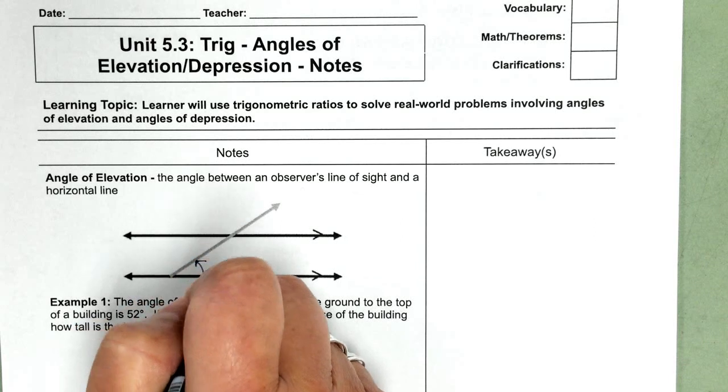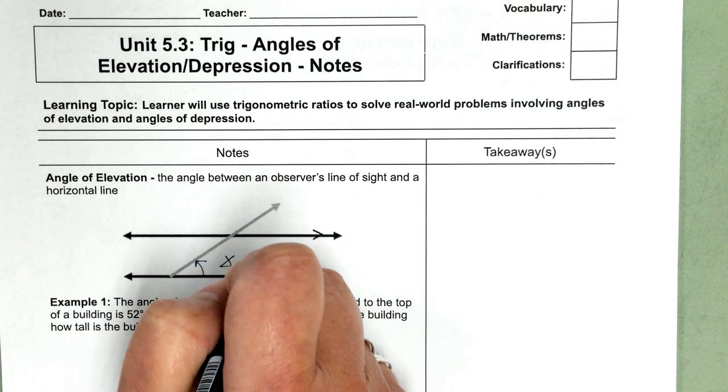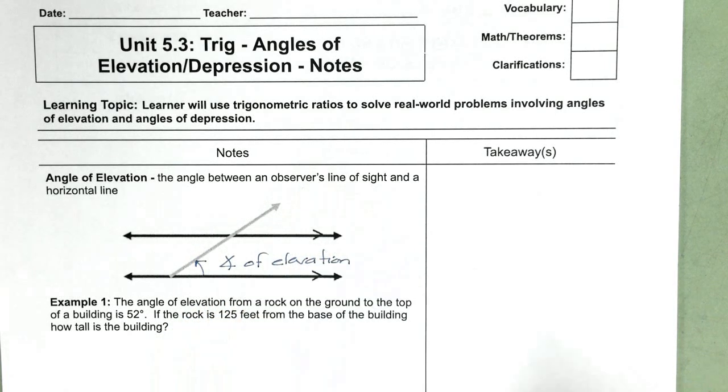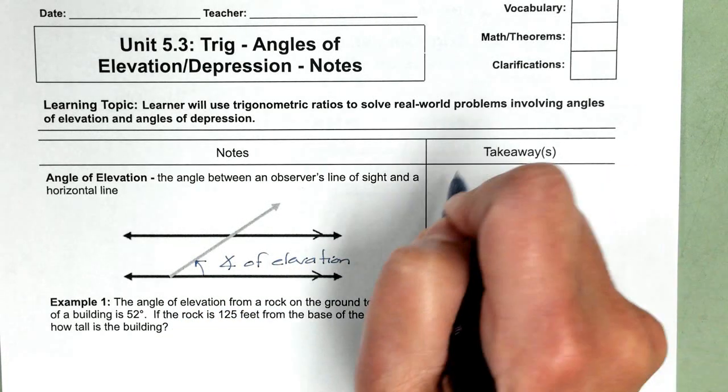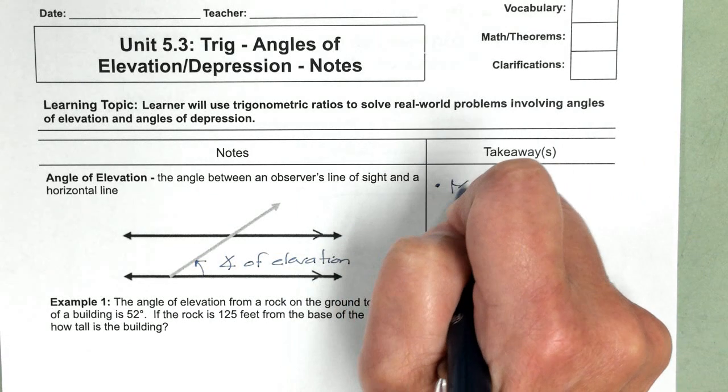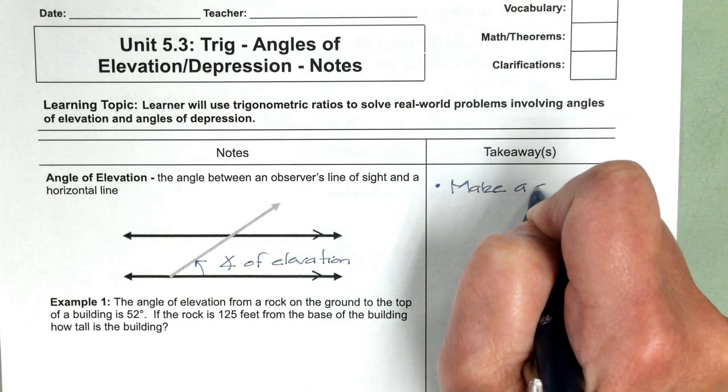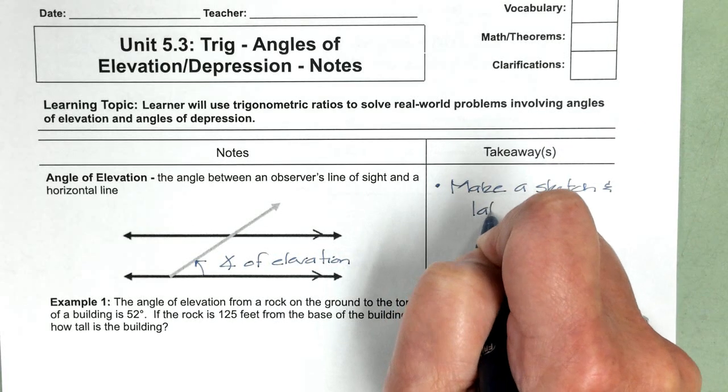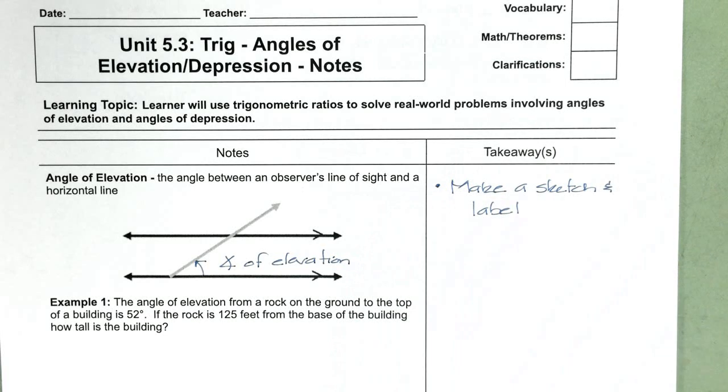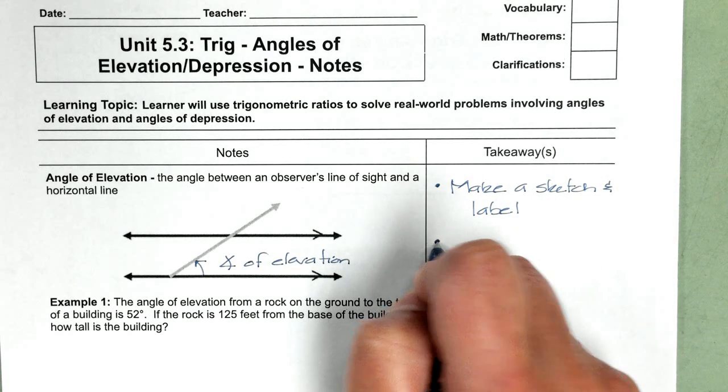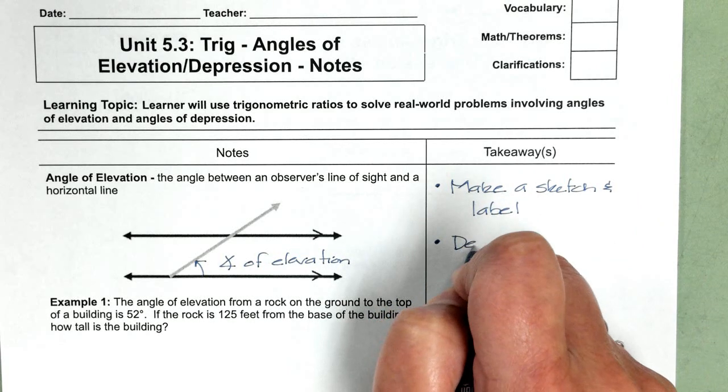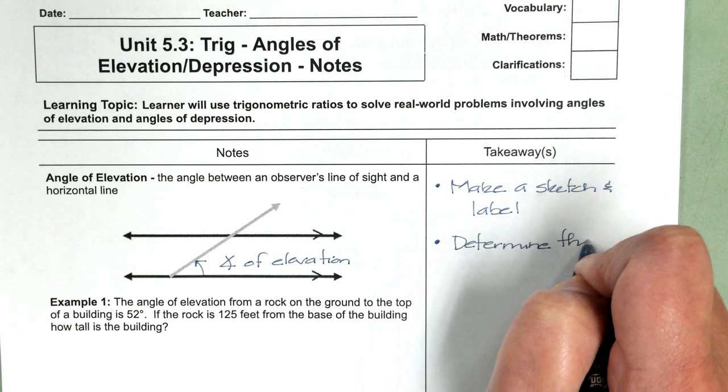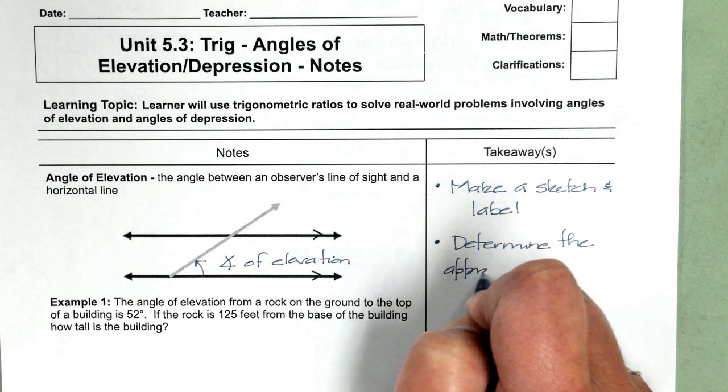So this would represent your angle of elevation. Okay, now, with your word problems, you need to make a sketch or make a drawing and label what you're given and what you're looking for because you're going to use this information to determine the appropriate trig ratio.